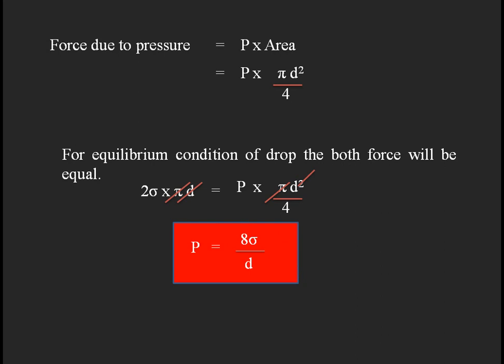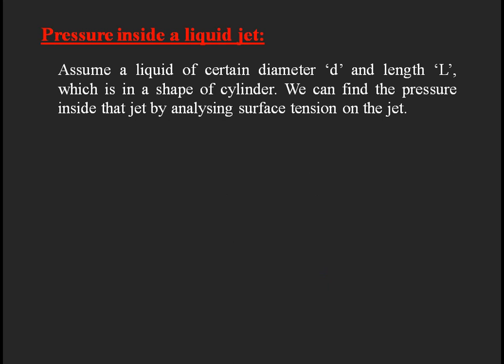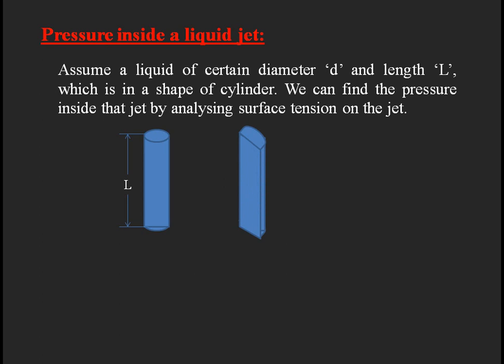This applies when you know the surface tension of a particular fluid and the diameter of the bubble. Similarly, for a liquid jet coming from a nozzle — its shape is cylindrical with a diameter d. To find the pressure, we assume a particular length l of the jet and analyze the surface tension on this cylindrical segment. The maximum surface tension occurs at the middle cross-sectional plane, so we take the half cross-sectional view of the cylinder.